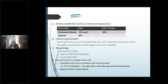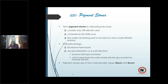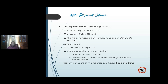For pigment stones: two types — black and brown. The term 'pigment stone' is misleading because pigment (bilirubin) is only 5 percent, cholesterol is less than 20–30 percent, and the major remaining part — about 70–80 percent — is amorphous unidentifiable residue. Together this forms what we know as a pigment stone; it is termed a pigment stone because it contains 5 percent bilirubin.